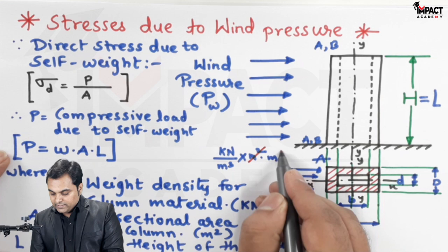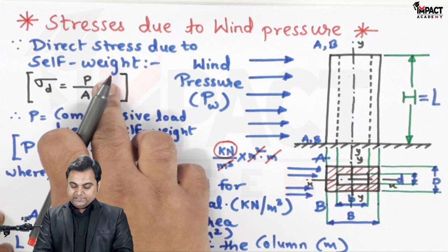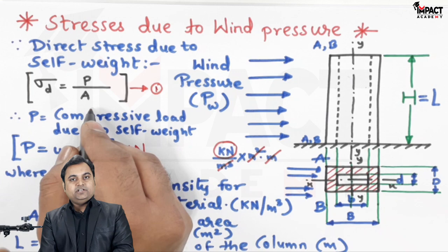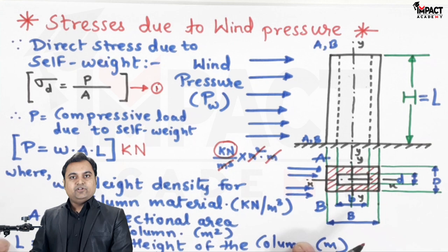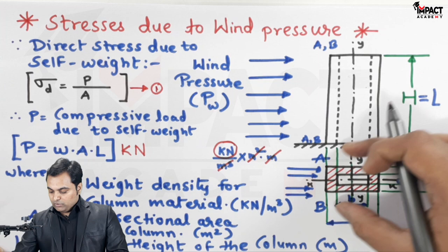Once the self-weight is known, we can put it into the equation — I will call this equation one. With A as the cross-sectional area, we can get the value of direct stress. Next, I would be explaining the bending phenomenon. Bending is due to the wind pressure acting on one side. Due to this wind pressure acting on face AB, it is not acting throughout the whole column — it is acting only over that face.